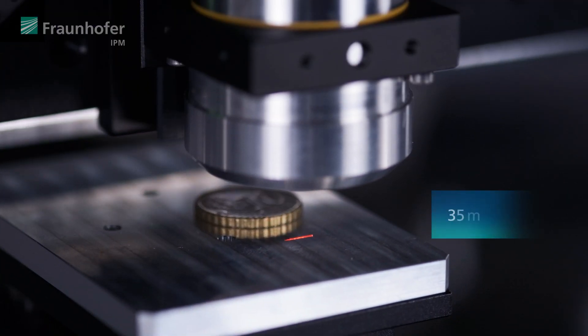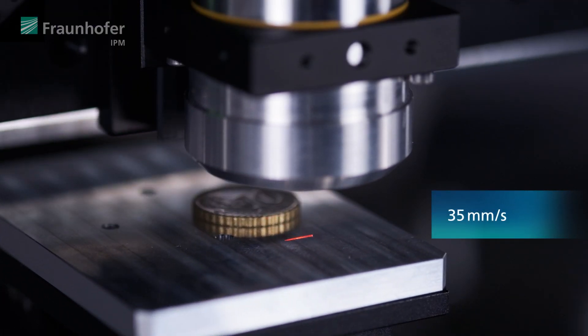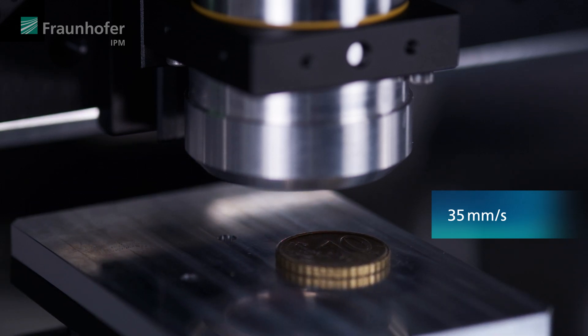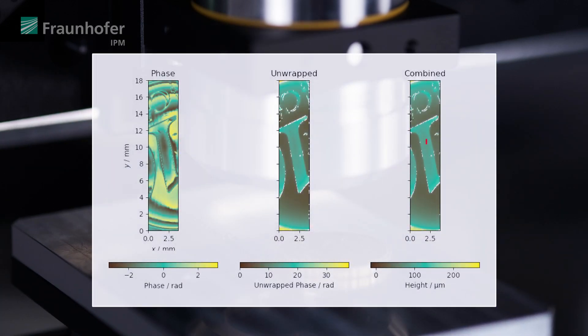So finally, you could see the 10 euro cent coin moving with 35 mm per second here in real time. You can see the result of stitching the sequence together and then unwrapping the image. On the right, you can see the final height map and there is a red line indicating a small cross-section.